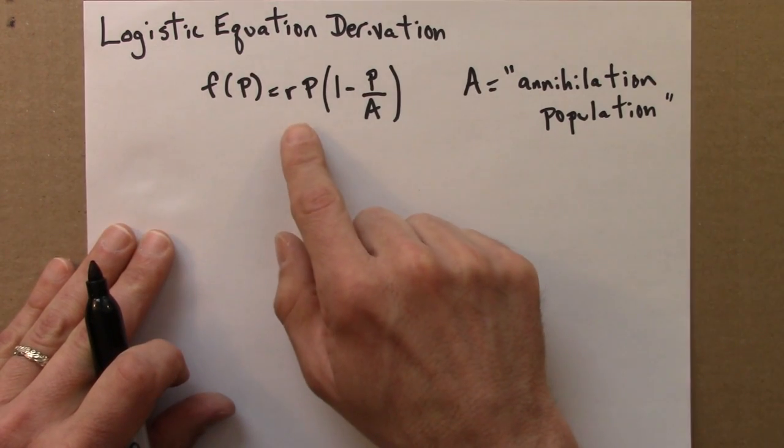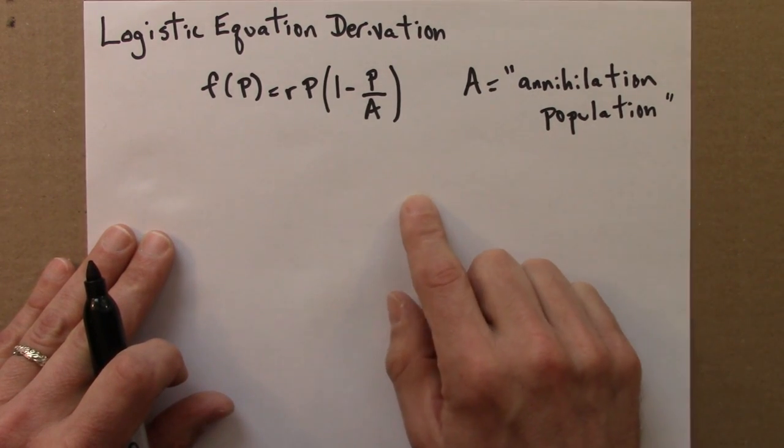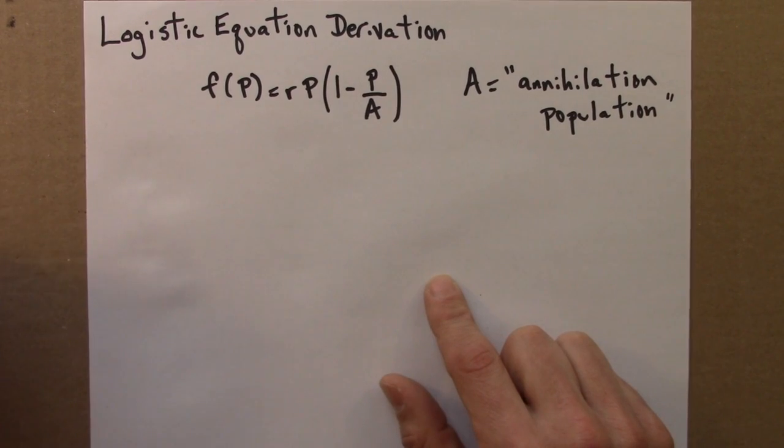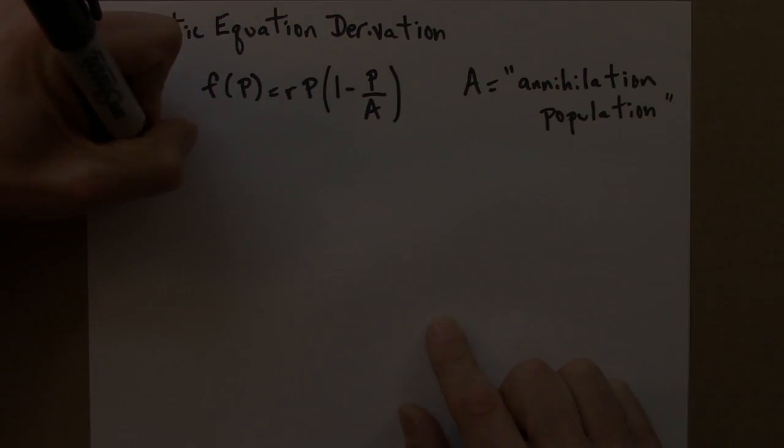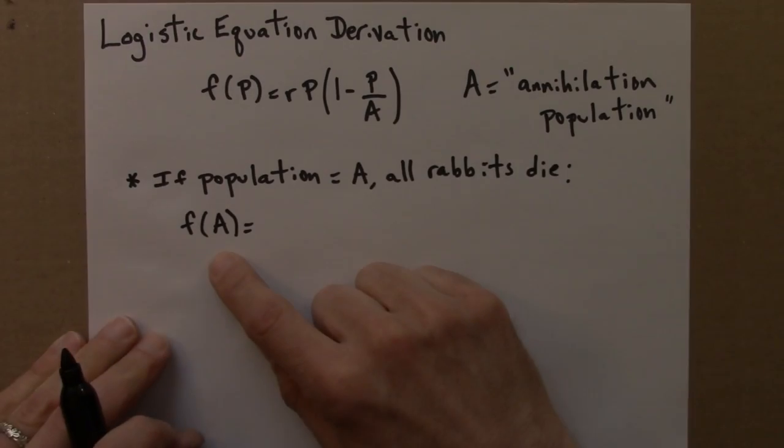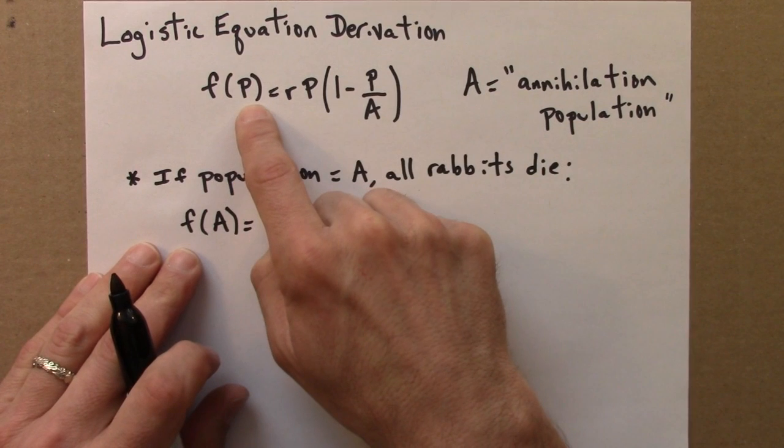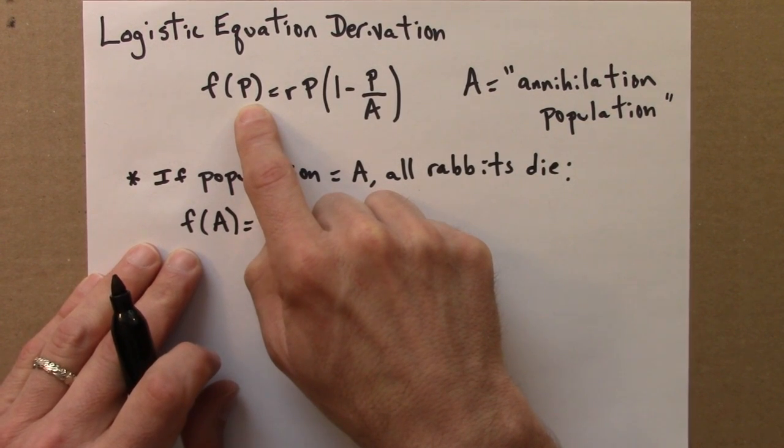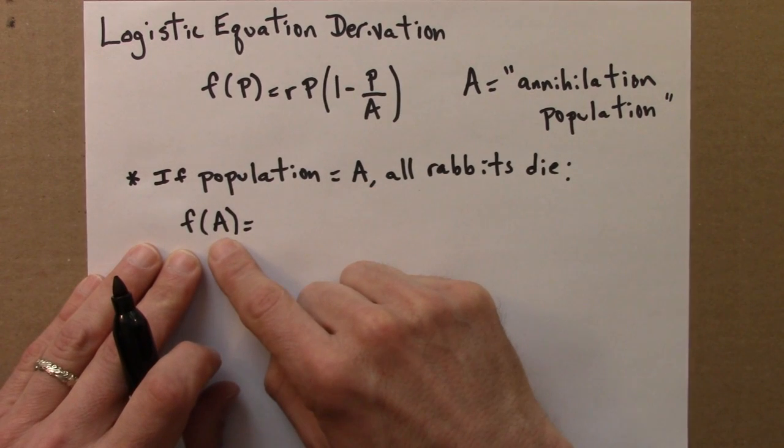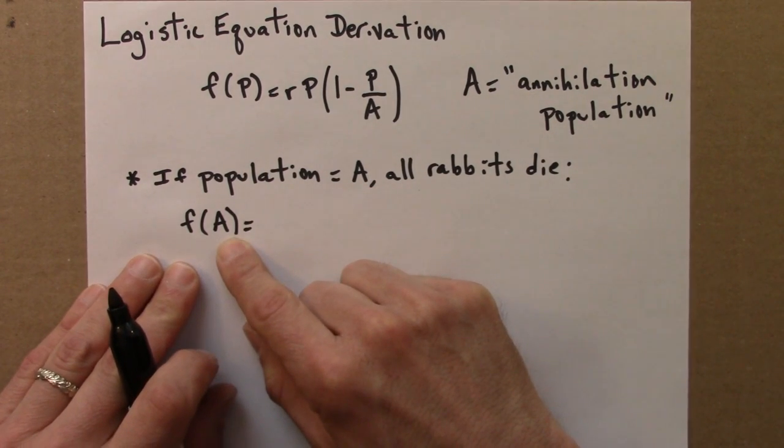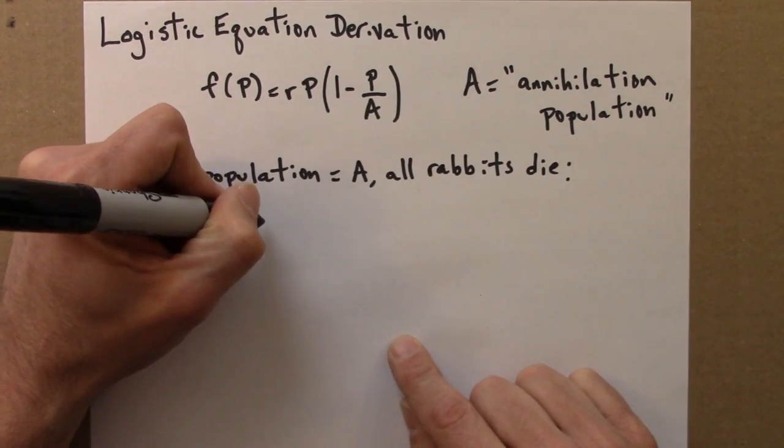So let me show you that statement algebraically. If the population equals a, all the rabbits die. So the question is what's f of a? Remember that this function tells you the population next year if you know the population is p, the current year. So if the population is a, then f of a would give the population the next year.